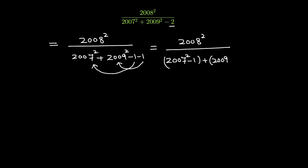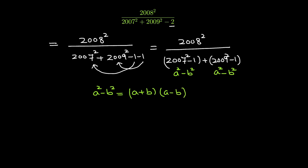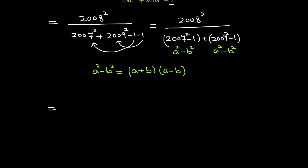In the denominator we have 2009 squared minus 1. This matches our formula: a squared minus b squared. Let us expand our formula — a squared minus b squared is equal to (a plus b)(a minus b). So this expression is equal to 2008 squared over (a plus b)(a minus b) applied to each term.